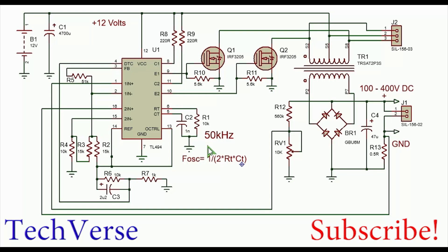What's up everyone, today I'll be showing you how you can make a power inverter with just a few components. The IC I'll be using is the TL-494 pulse width modulation IC, and you'll also need a bunch of other components.